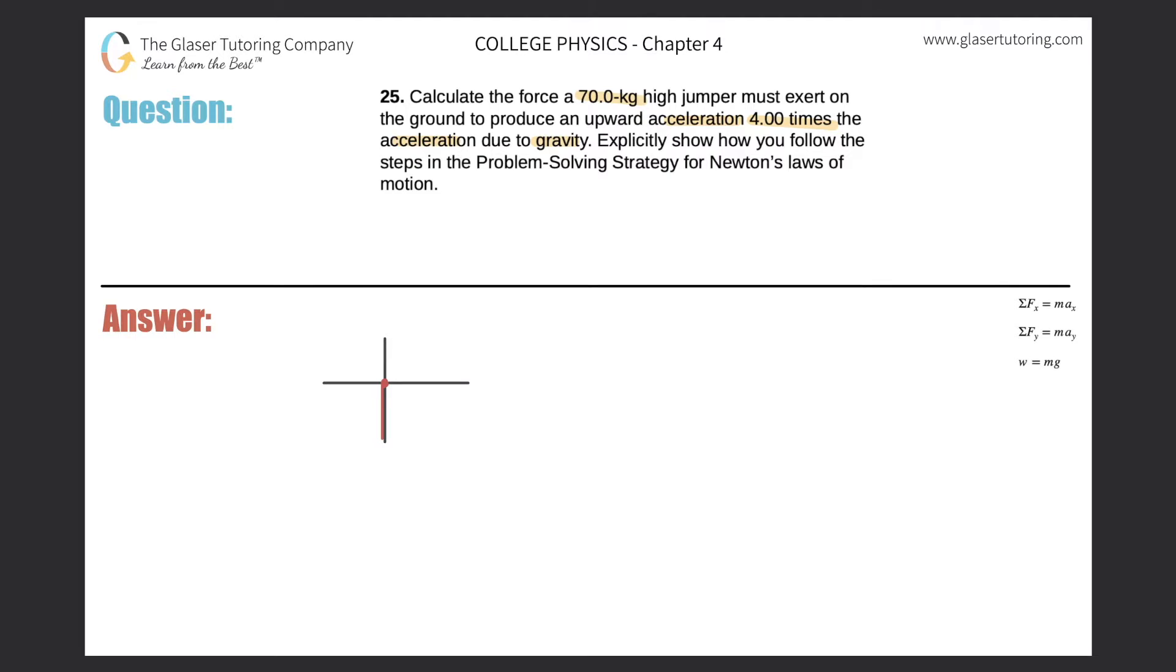So let me do that first. This jumper has a certain weight. The weight of that jumper is going to be equal to the mass multiplied by gravity. So let's simply calculate that first. The mass is 70 kilograms, gravity is 9.80. So the weight of this jumper is simply going to be 70 times 9.8, so 686. We have 686 newtons.